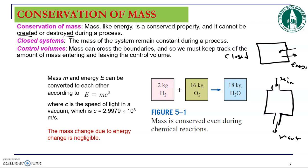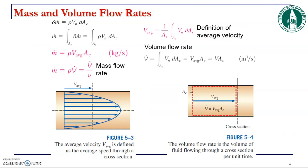Mass is a conserved property. For example, if you mix two kilograms of hydrogen with sixteen kilograms of oxygen, you get eighteen kilograms of water. The sum of the input masses equals the total amount of mass produced during the process.